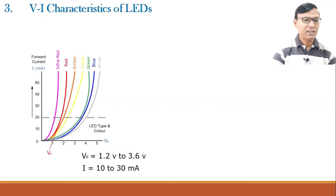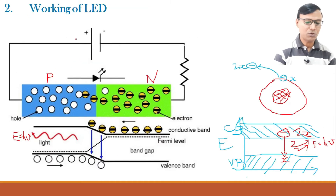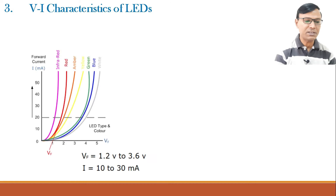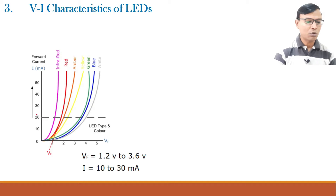The VI characteristics of a light emitting diode are taken in the forward bias condition. The forward voltage for different colors of LEDs ranges from 1.2 volts to 3.6 volts, and the current ranges from 10 milliampere to 30 milliampere. The normal value of current is approximately 20 milliampere.